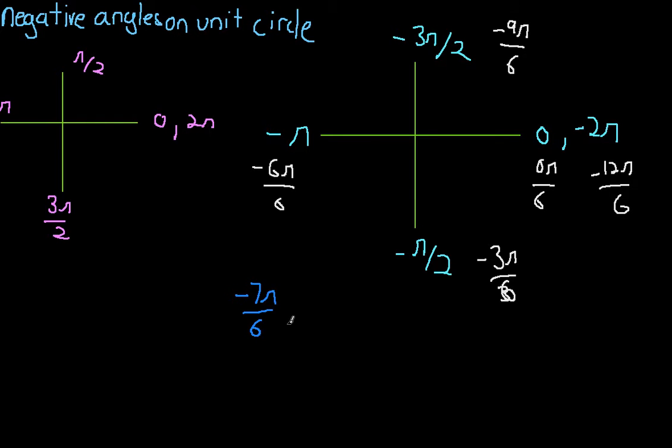So we can see that our negative 7π/6 is within the second quadrant. It's in between negative 6π/6 and negative 9π/6.